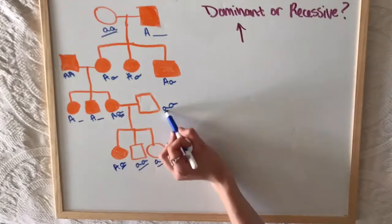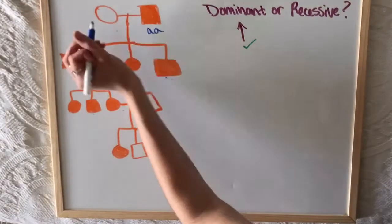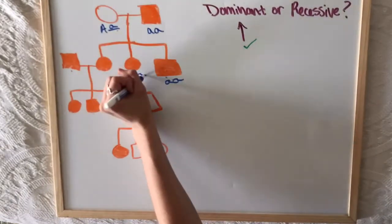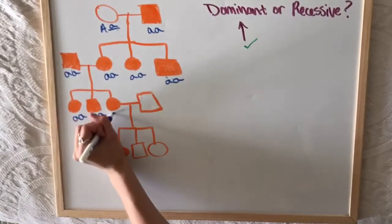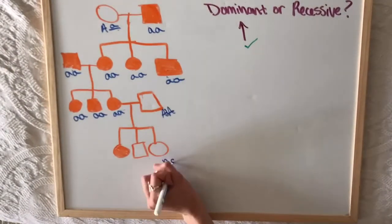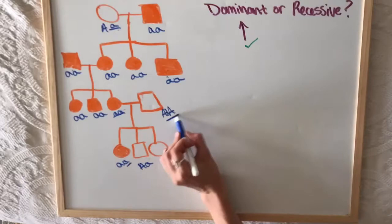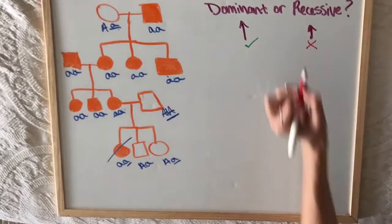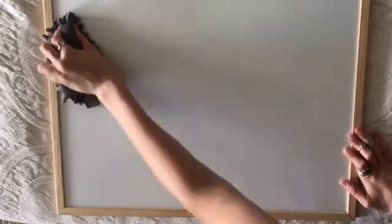And that's it. Since this works, dominant is a possibility. Now let's test recessive. Then we come to this couple, who in a Punnett square would show us that every child has to be heterozygous, which means that daughter doesn't exist, and so recessive is not a possibility.